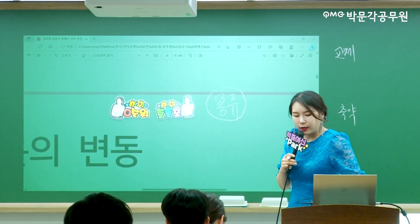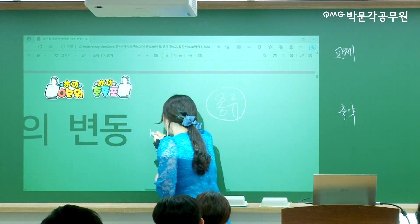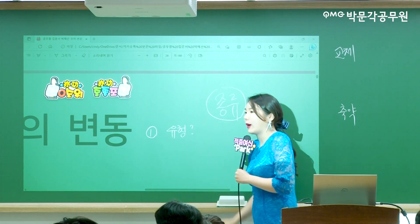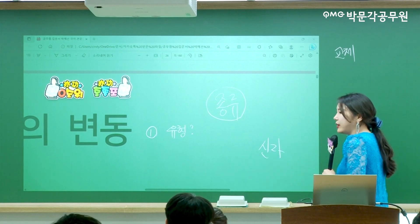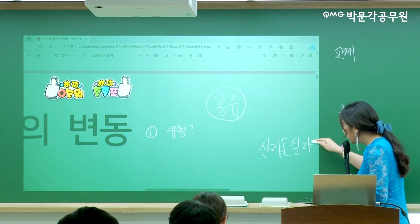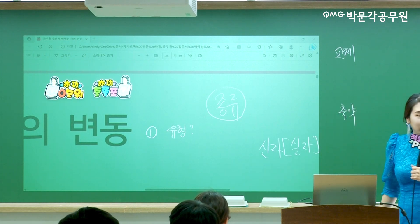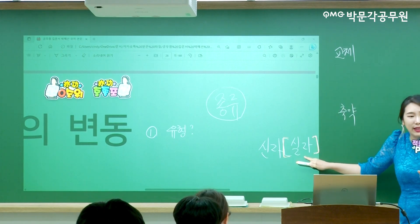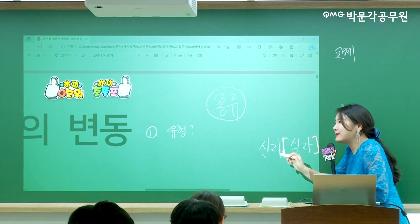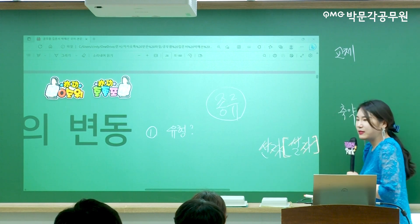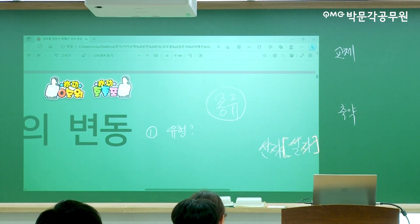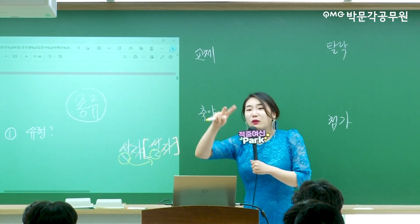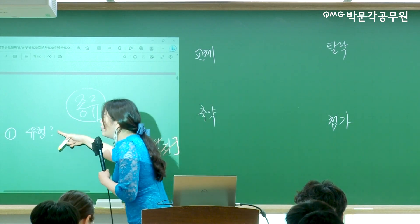음운 변동 옆에다 쓰세요. 첫 번째로 물어보는 건 특정 음운 변동 현상이 '고추탈출' 중에 어떤 것에 속하느냐를 물어봐요. 예를 들어 '신라'를 발음하면 [실라]가 되는데, 발음 기호를 보고 숨은 그림 찾기처럼 달라진 부분을 찾아봐요. 니은이 리을로 1대1 교체된 거잖아요. 선수 교체랑 똑같아서 교체 유형에 넣을 수 있죠. 이 유형을 판단하는 문제가 나오기 때문에 '고추탈출'을 외운 거예요.